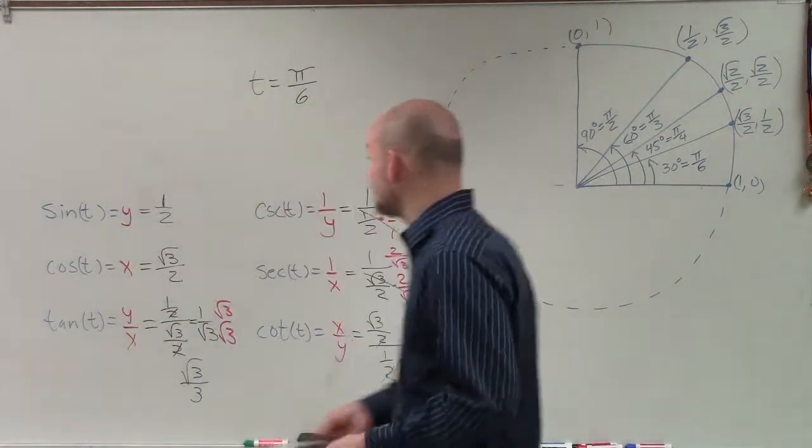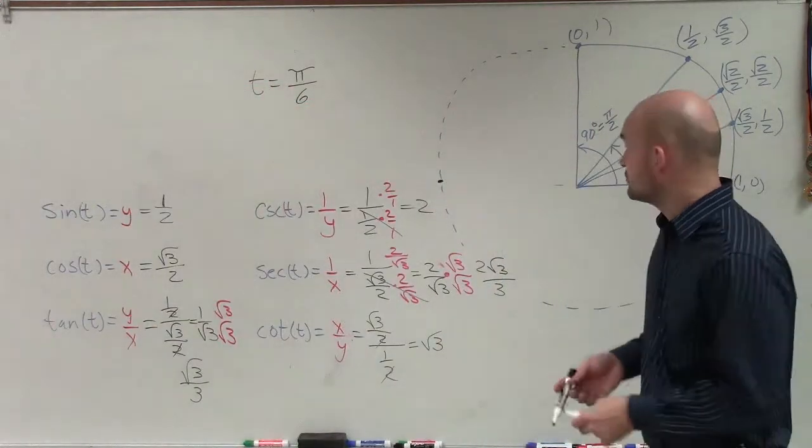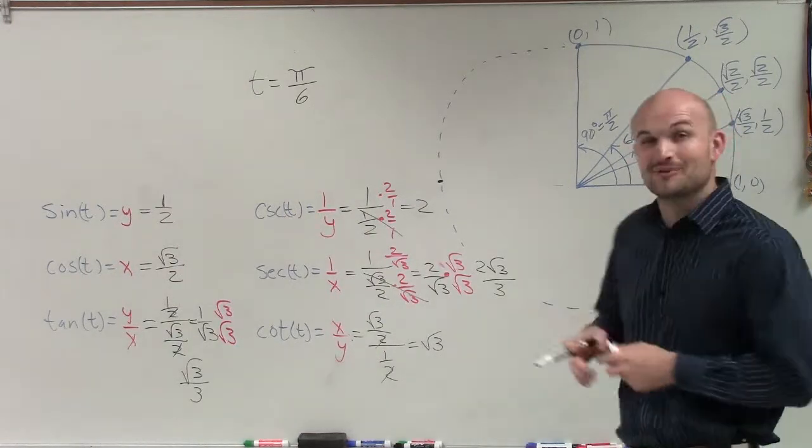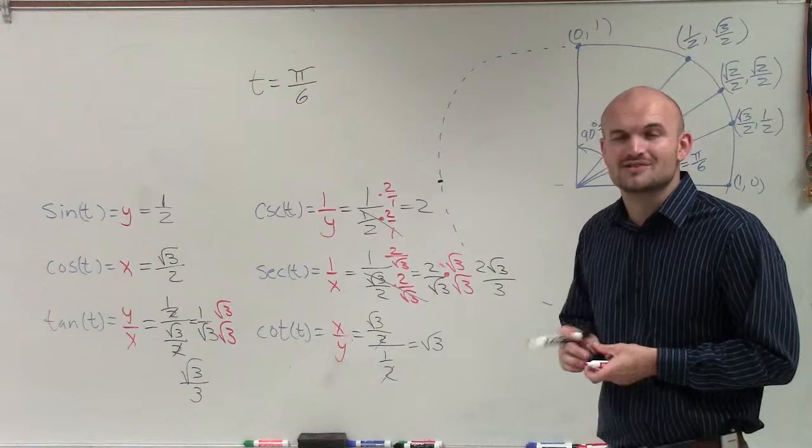So there you go, ladies and gentlemen. That is how you evaluate your six trigonometric functions when given an angle that produces a point on the unit circle, especially one that's so nice for us like in the first quadrant. Thanks.